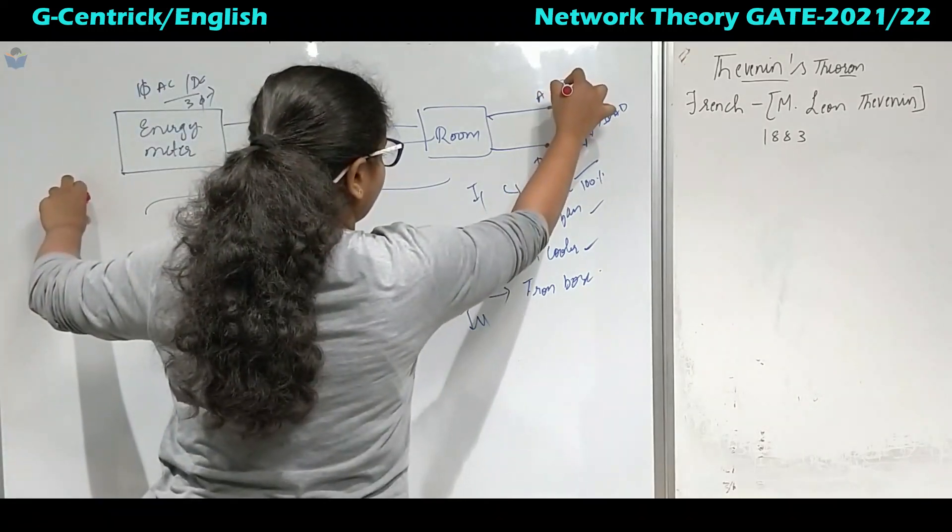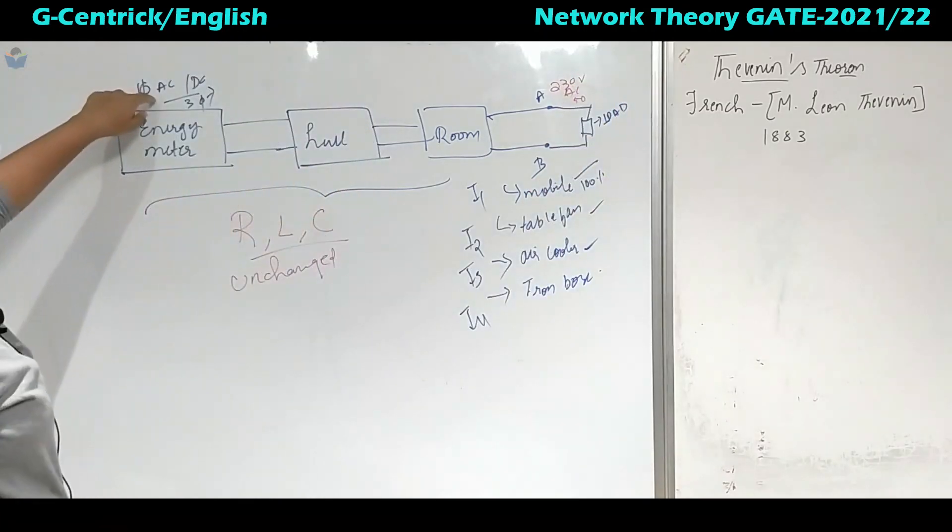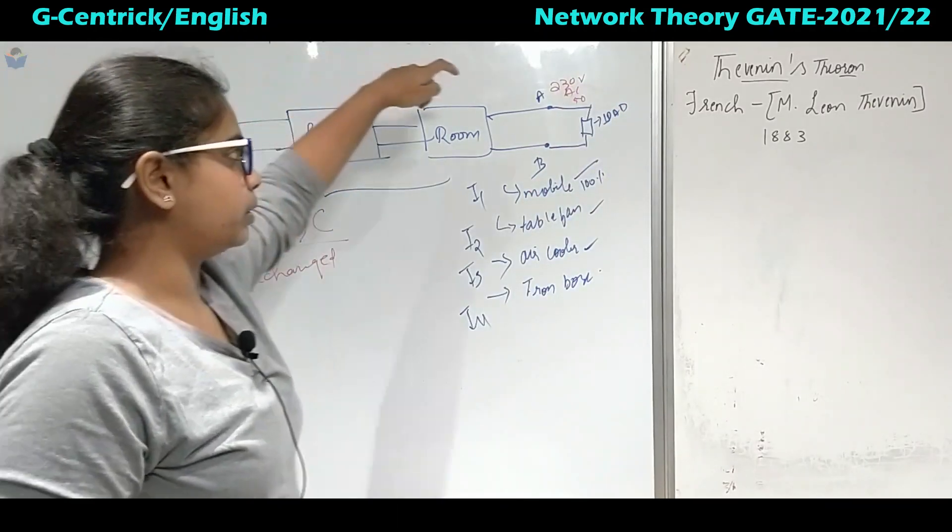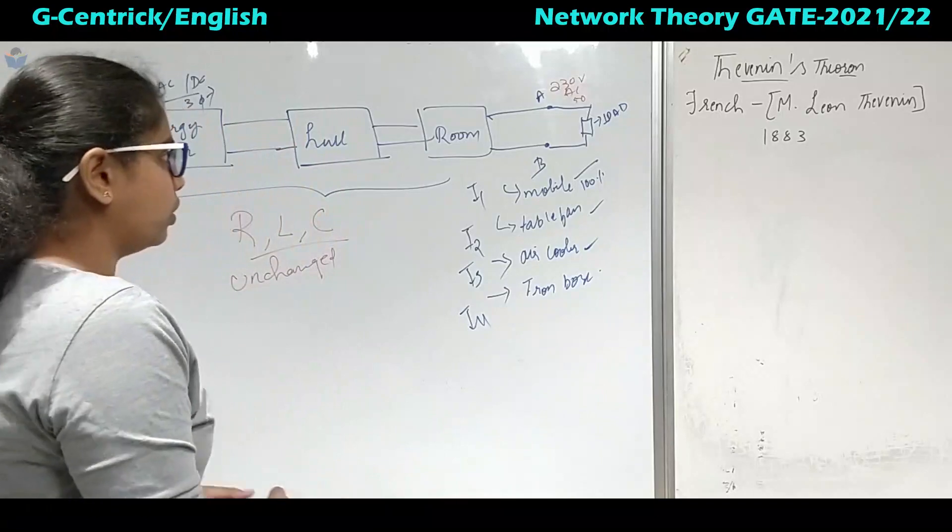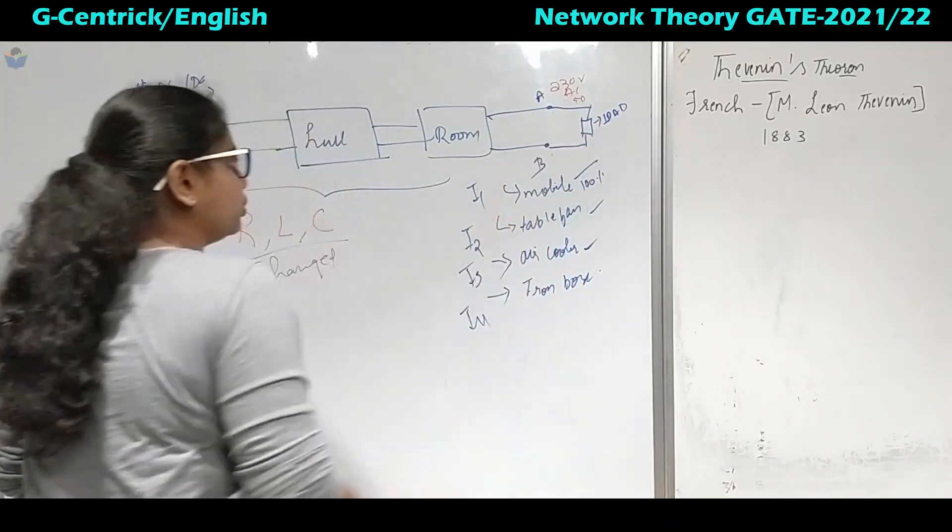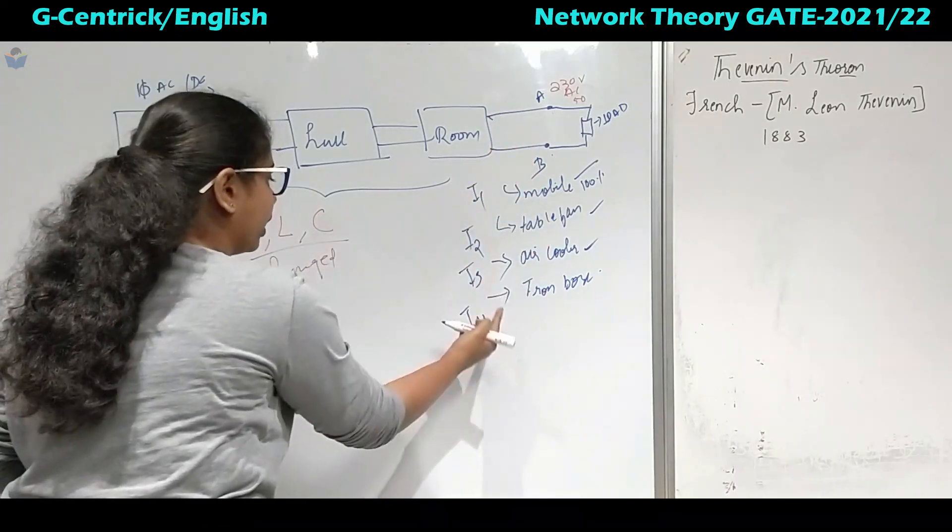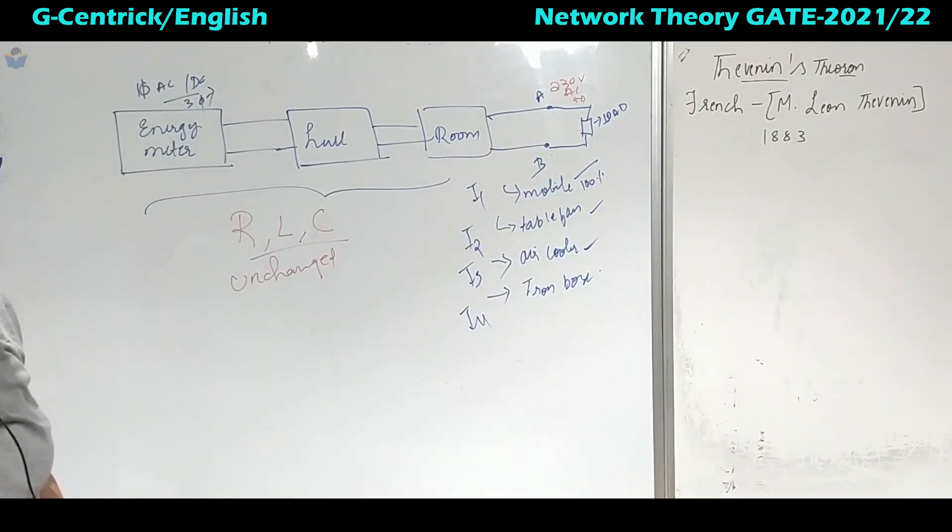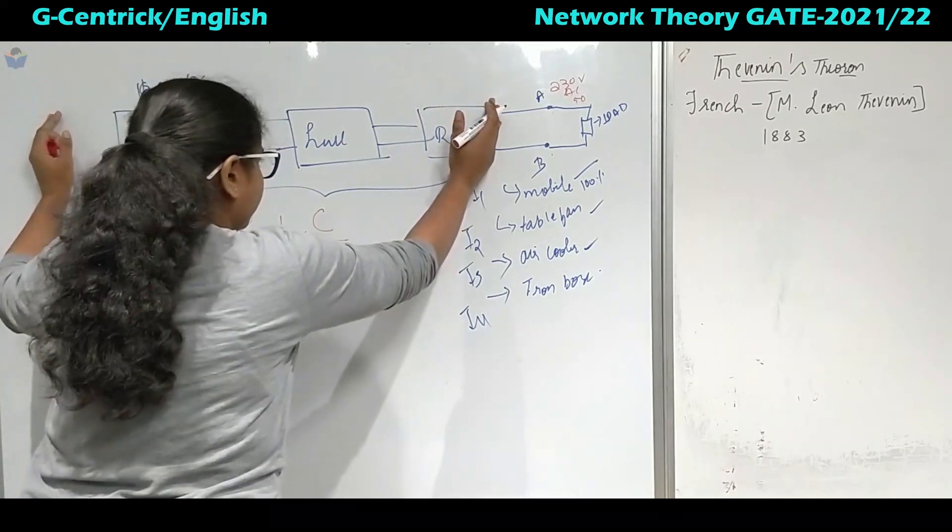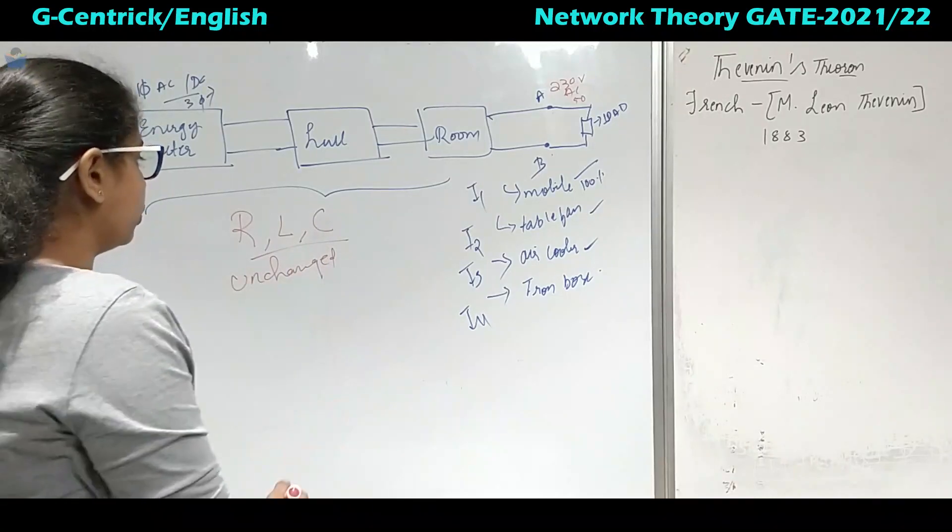Here also you will get at the end 230 volt supply AC 50 hertz. That is because single phase we are taking, we will keep it as 230 volts. Till here also AB terminal, it is not going to change but the current I1, I2, I3 and I4, they are changing. This we will call it as bilateral network, linear bilateral network.